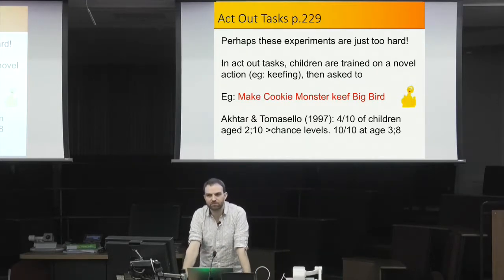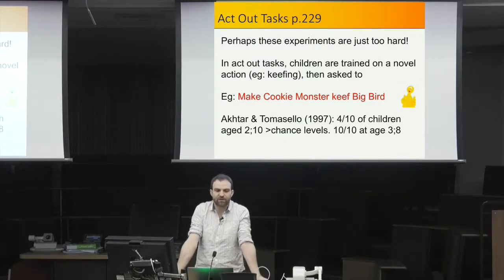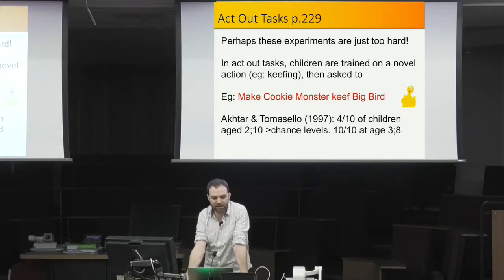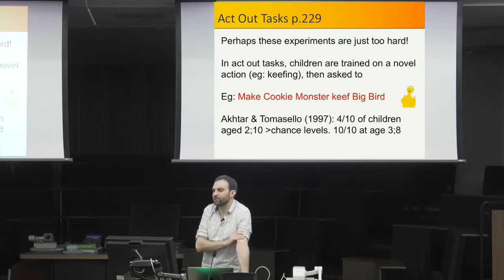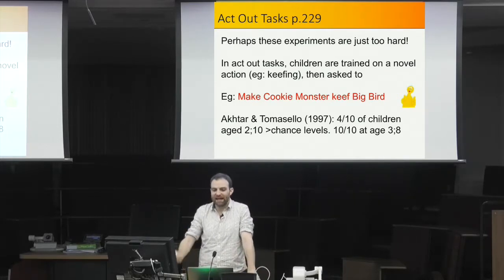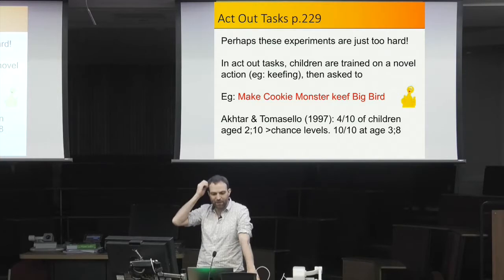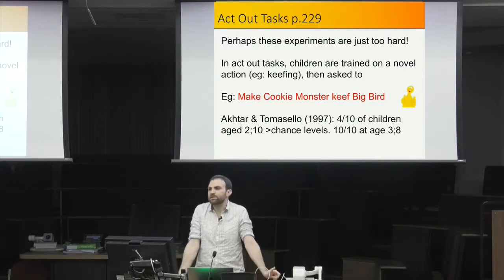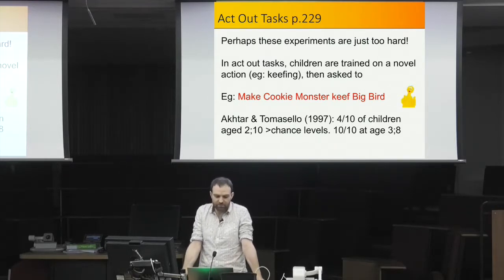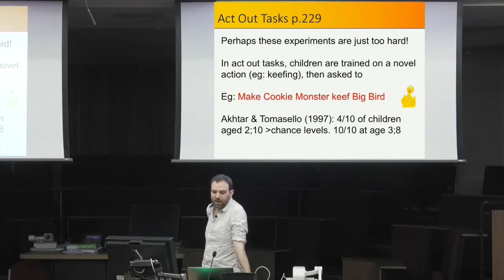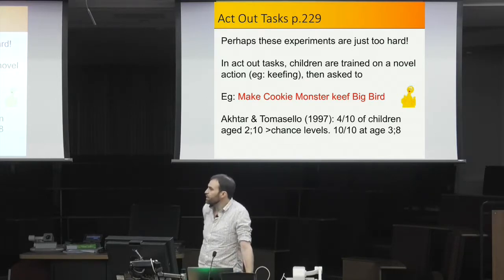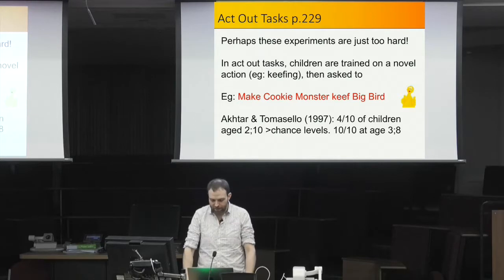Since production tasks may be too difficult for young children, act-out tasks have also been used: children are given a novel action like 'keefing means hitting someone over the head with a toy hammer,' given toys, and asked to 'make Cookie Monster keef Big Bird.' The classic study by Apto and Tomasello found that just before age three, only about four out of ten children enacted this correctly, whereas relatively older three-year-olds could all do it correctly.